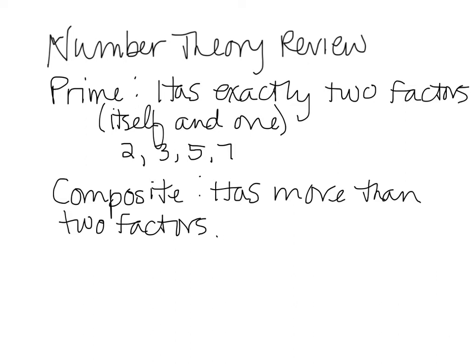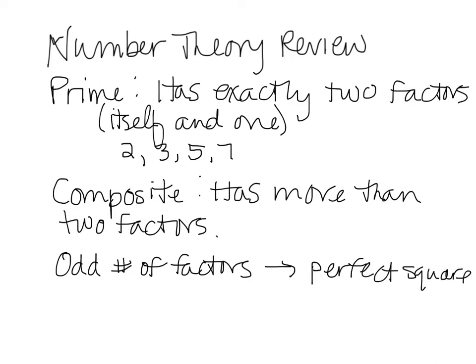And here's a nice little fact: any number with an odd number of factors is always going to be a perfect square. Because if something doesn't have a factor partner, that means it must be itself. For example, let's look at 36.